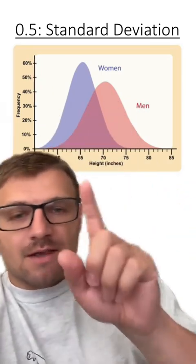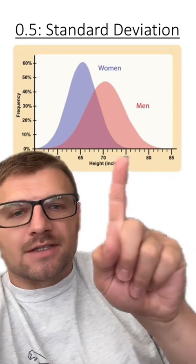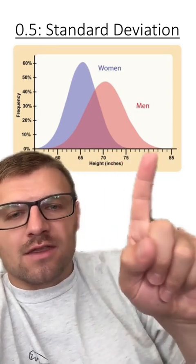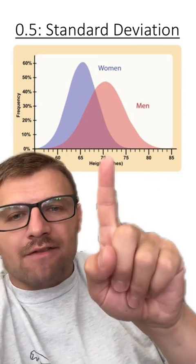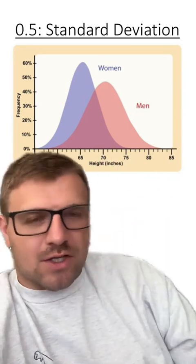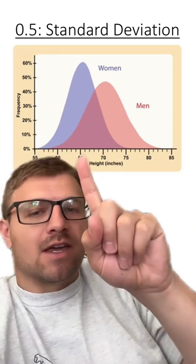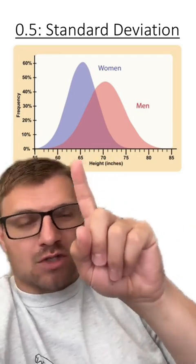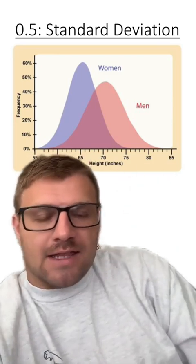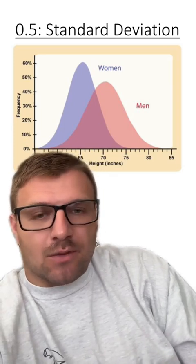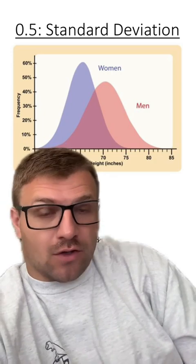This shows us that males are taller on average than females. You can see the variation in red, and the average male is around 70 to 71 inches tall. However, there's less variation within females, and they have a shorter average height, which is around 65 inches. So what we're looking at in these two different data samples is variation within and variation between the two different groups.